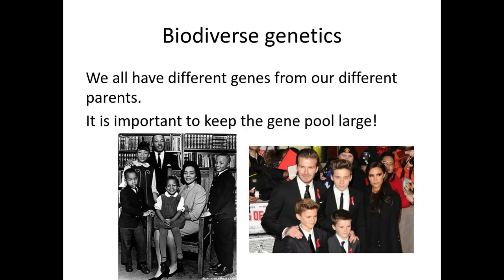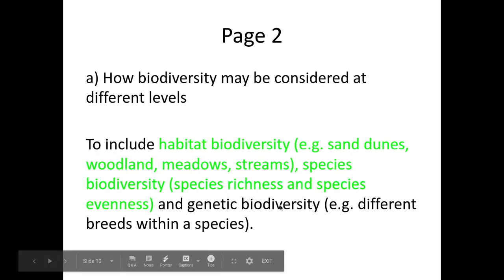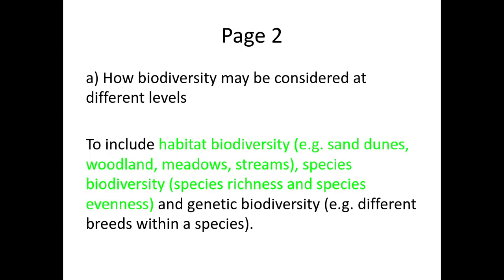We also have diversity within our genetics. We all have different genes from our parents, and it's important to keep the gene pool large. A large gene pool means we are able to withstand disease and maintain strong genetics — something we'll look at later when we cover genetics in year 13. Genetic biodiversity is measured using gene polymorphic loci, which is covered in specification point E. A good example of genetic biodiversity is different breeds within a species, such as the variety of dog breeds, which are basically a variety of genes within the population that make them so different from one another.